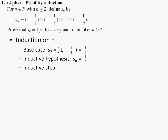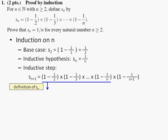And the third step is the inductive step. So Sn plus 1 is 1 minus 1 over 2 times 1 minus 1 over 3 times dot dot dot times 1 minus 1 over n times 1 minus 1 over n plus 1. By the definition of Sn,